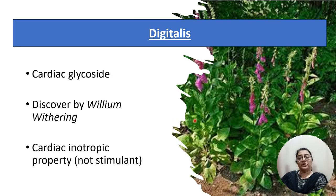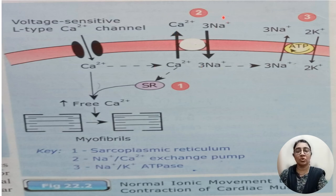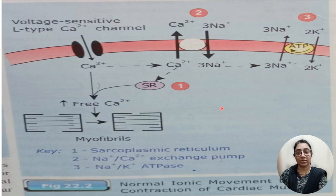Positive inotropic drugs like digitalis increase the force of contraction of the heart. It is also called a cardiac glycoside and was discovered by William Withering. This figure shows the normal ionic movement of contraction of cardiac muscle. The voltage-sensitive L-type calcium channel allows calcium to enter into the cell and also stimulates increased release of calcium from the sarcoplasmic reticulum. Calcium exits via the sodium-calcium exchanger — three molecules of sodium enter into the cell and one molecule of calcium exits. The sodium-potassium exchanger moves three molecules of sodium out and two molecules of potassium into the cardiac cell. This is the normal ionic movement of cardiac muscle.